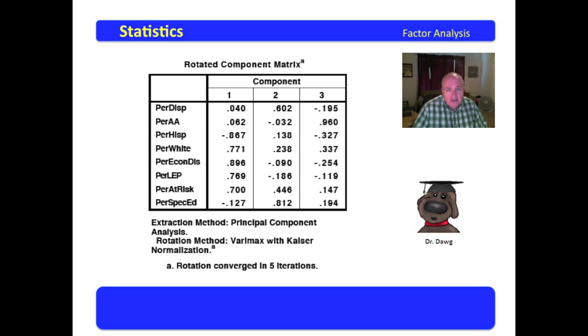Here's our rotated component matrix. We have at top factor one, factor two, and factor three. Here we have the variables that we produced: the percentage of disciplinary placements, African-American, Hispanic, white student enrollments, the economically disadvantaged percentages, limited English proficiency, at risk, and special ed.